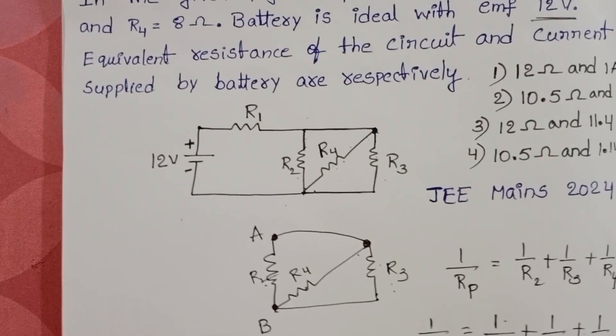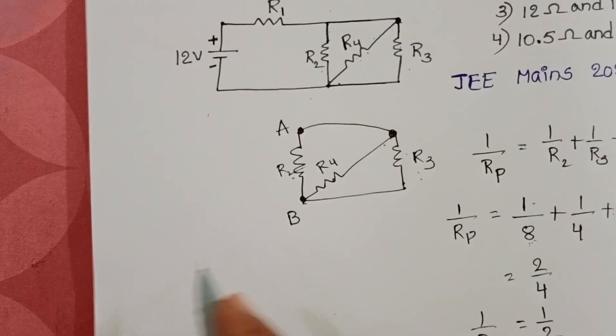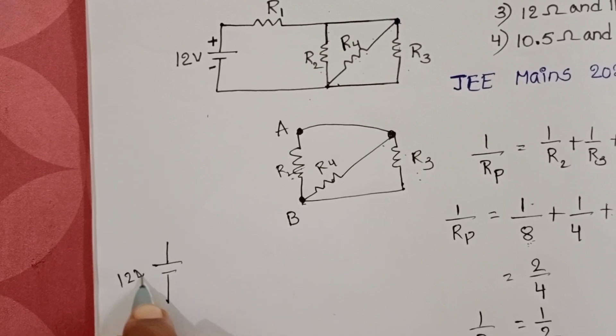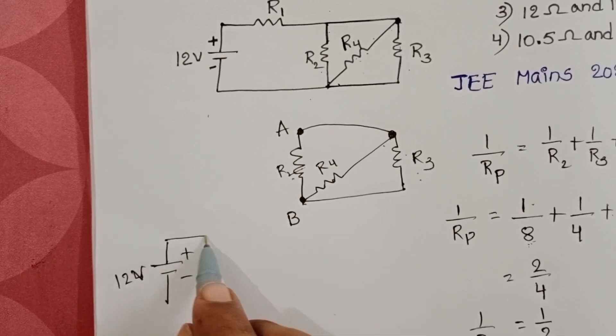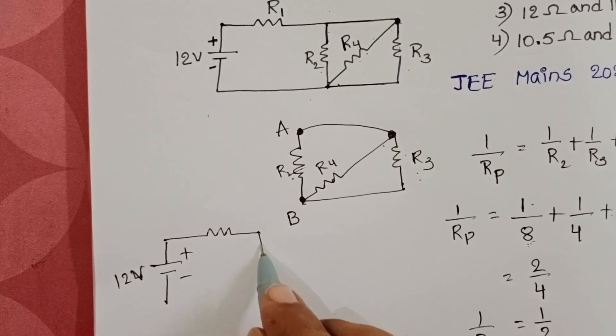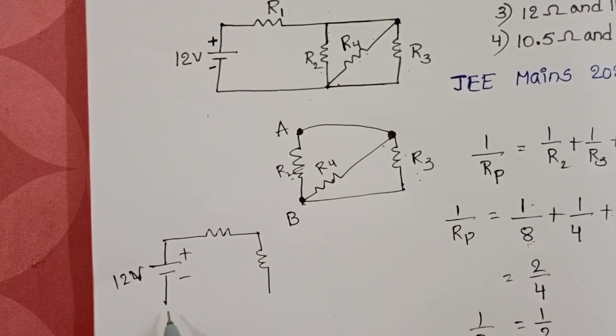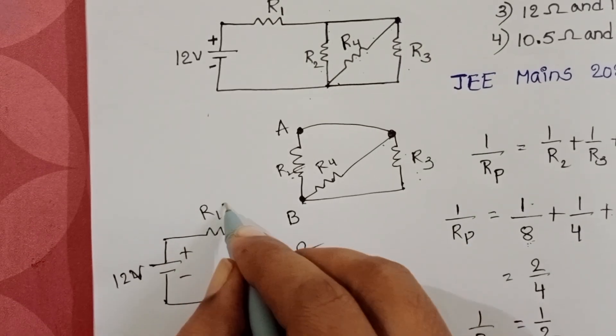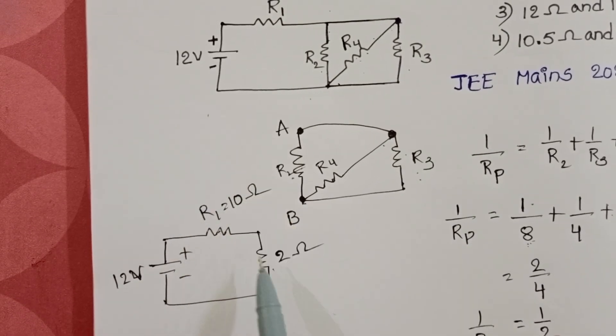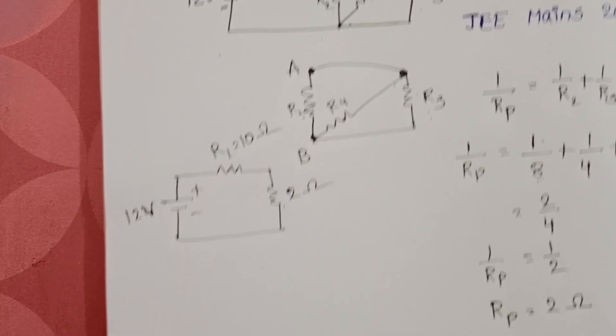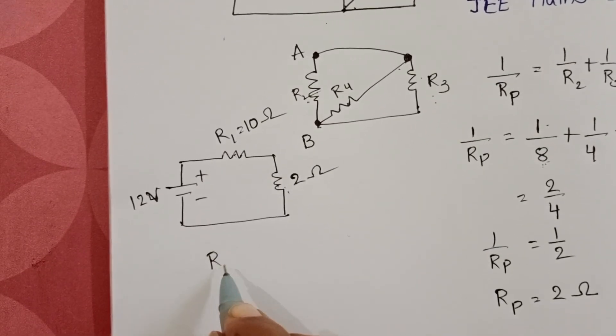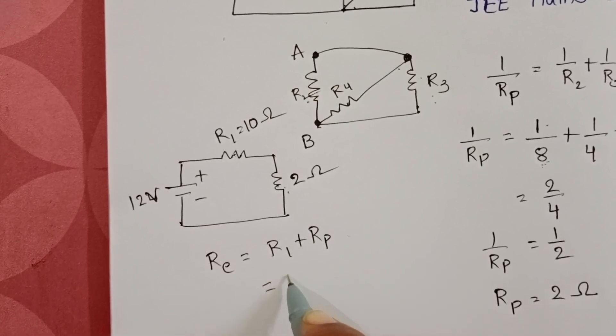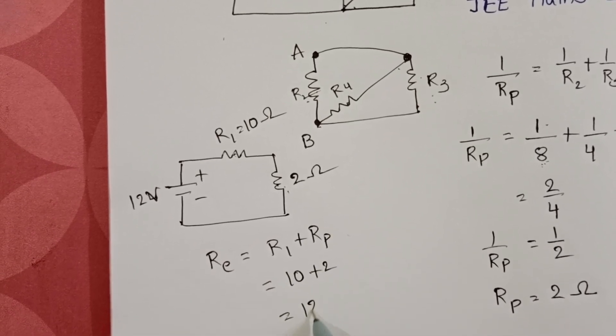Now redraw the circuit diagram. Battery is 12 volts, and here R1 resistor is there. Equivalent resistance of the three resistors is 2 ohm, and R1 is 10 ohm. These two resistors are connected in series. The final equivalent resistance of the circuit equals R1 plus Rp: 10 plus 2 equals 12 ohm.